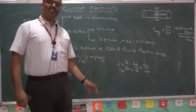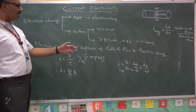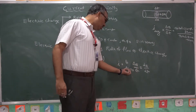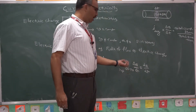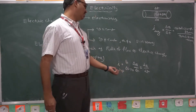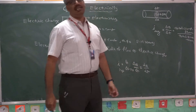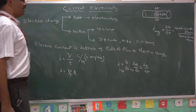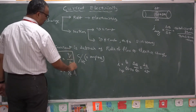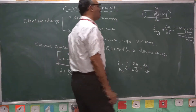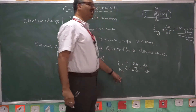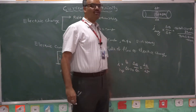Instantaneous current is defined as the limit of delta T tends to 0 of delta Q by delta T, that is nothing but dQ by dT. The definition of instantaneous current is the current passing through a conductor at a particular instant of time. So to summarize: electric current is charge flown by time taken; average electric current is total charge flown by total time taken; instantaneous electric current is the derivative of charge with respect to time.